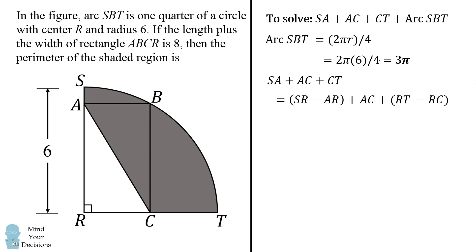So before I get to that, let me just rearrange this equation. We're going to be adding three terms: SR, AC, and RT, and we're going to subtract AR and we're going to subtract RC. We'll group them together, so we'll subtract the quantity AR plus RC.